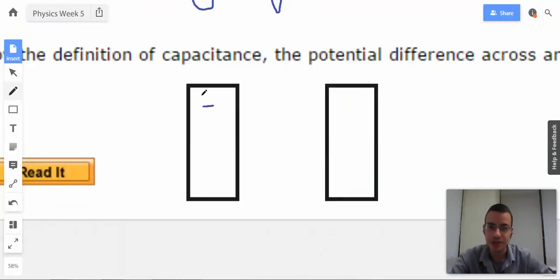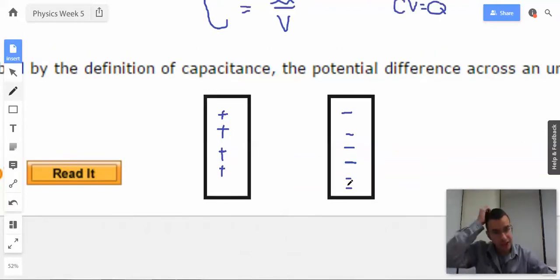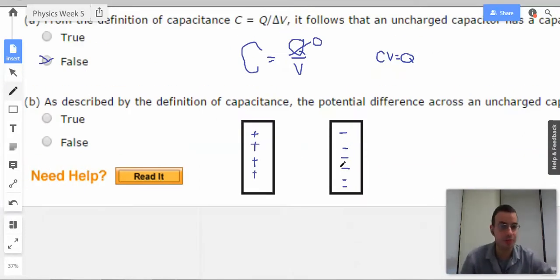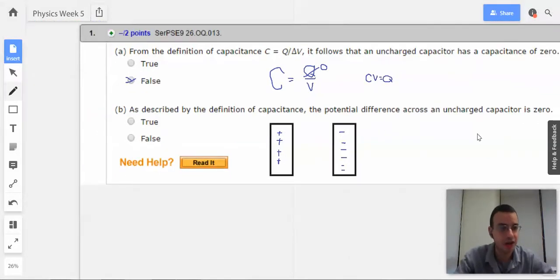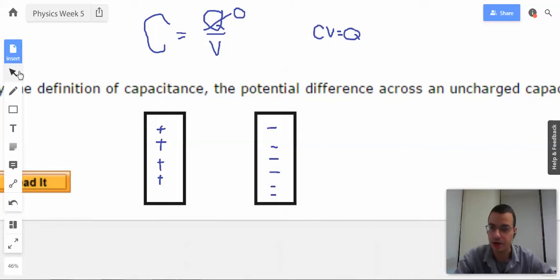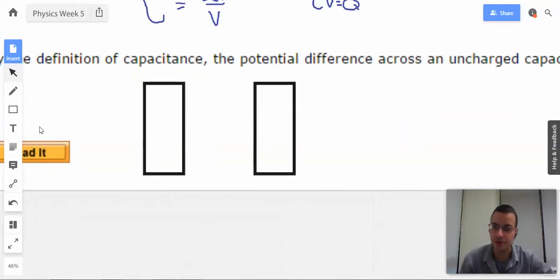So the definition of potential voltage, potential energy difference, is taking a test charge from infinity and bringing it close to you. So it wants to know what the difference between these two would be. So the idea here is, as described by the definition of capacitance, potential difference across an uncharged capacitor is 0. Okay. So I drew all those charges for nothing. Sorry, charges. Time for you to die. All right. So there are no charges on here. There's actually charges, but they're equal amounts, so same as having.